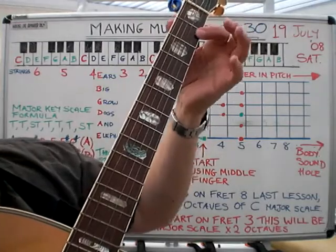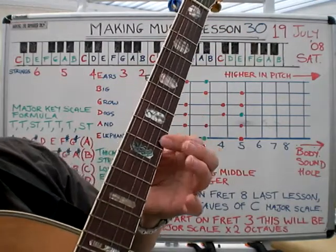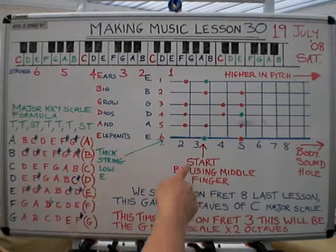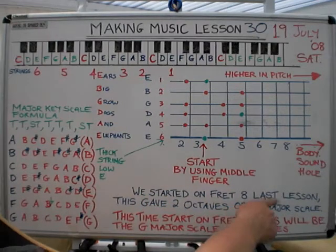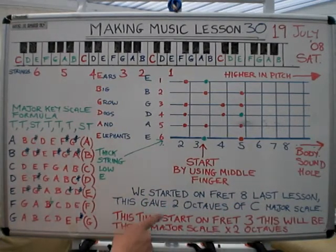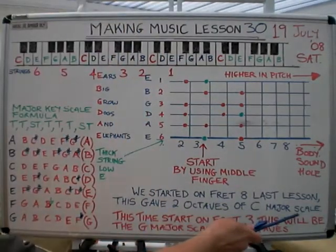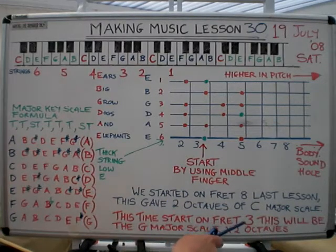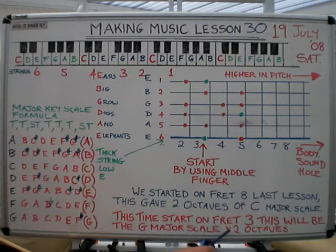So originally in lesson 29 we started on fret number eight, and that gave us two octaves of the C major scale. This time we're going to start at fret three, and this will be the G major scale — again two octaves.